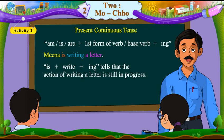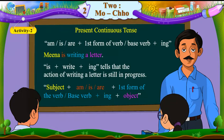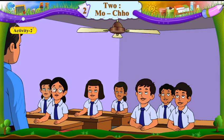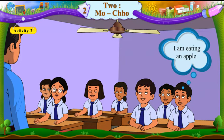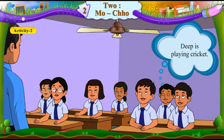So, students, the format of present continuous is subject plus am, is, or are, plus first form of the verb or base verb, plus ing, plus object. Come on, students, give me some more examples. Vipul, you give an example. I am eating an apple. Very good, Vipul. Sahil, come on, you give an example. Deep is playing cricket.